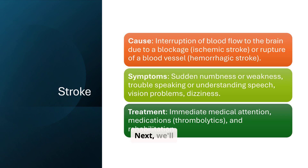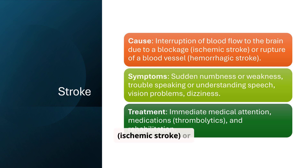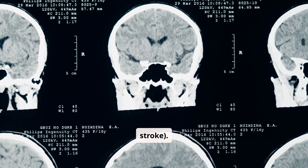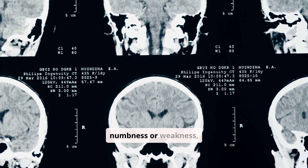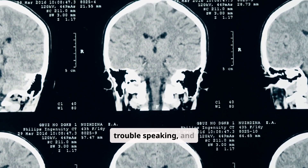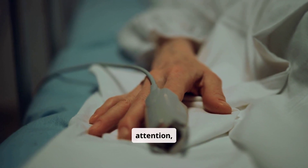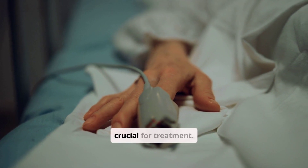Next, we'll discuss stroke. This occurs when blood flow to the brain is interrupted, either due to a blockage — ischemic stroke — or a rupture of a blood vessel — hemorrhagic stroke. Symptoms include sudden numbness or weakness, trouble speaking and vision problems. Immediate medical attention, medications and rehabilitation are crucial for treatment.